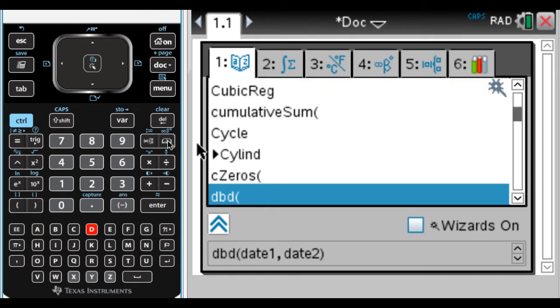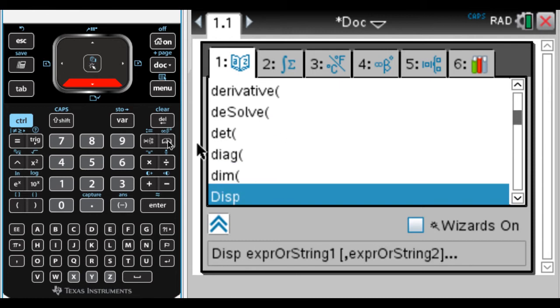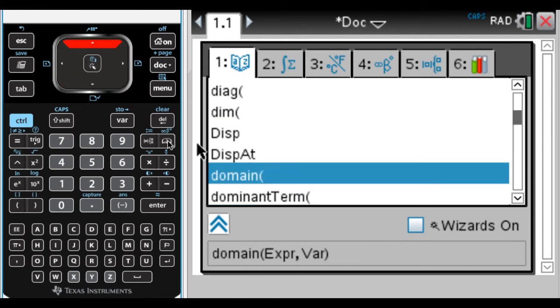If you just type the letter D, it will bounce to the first alphabetical entry for D, and then you can scroll through the list until you get to domain. You can see it's telling you that when you use the function, you have to give it an expression and then a variable. So I'm going to give it an expression, a variable, and it's going to try to find the domain.